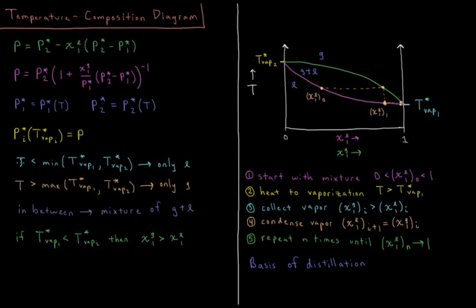If we have the temperature less than the minimum of the boiling points of each of the pure liquids, then we're going to have only a liquid phase. If the temperature is greater than the maximum vaporization temperature of each of the pure liquids, then we'll only have gas. So at very high temperatures we only have gas, at very low temperatures we only have liquid, but in between we can have some mixture of gas and liquid depending on the total mole fraction of component 1 and component 2.